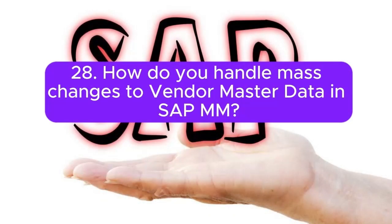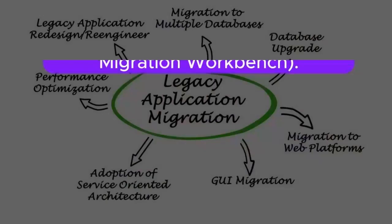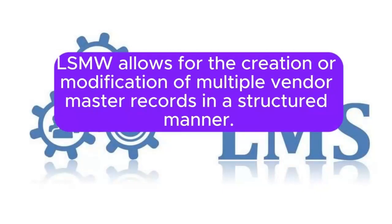28. How do you handle mass changes to Vendor Master Data in SAP MM? Answer: Mass changes to Vendor Master Data can be performed using transaction code MKMASS or by using LSMW (Legacy System Migration Workbench). LSMW allows for the creation or modification of multiple Vendor Master Records in a structured manner.